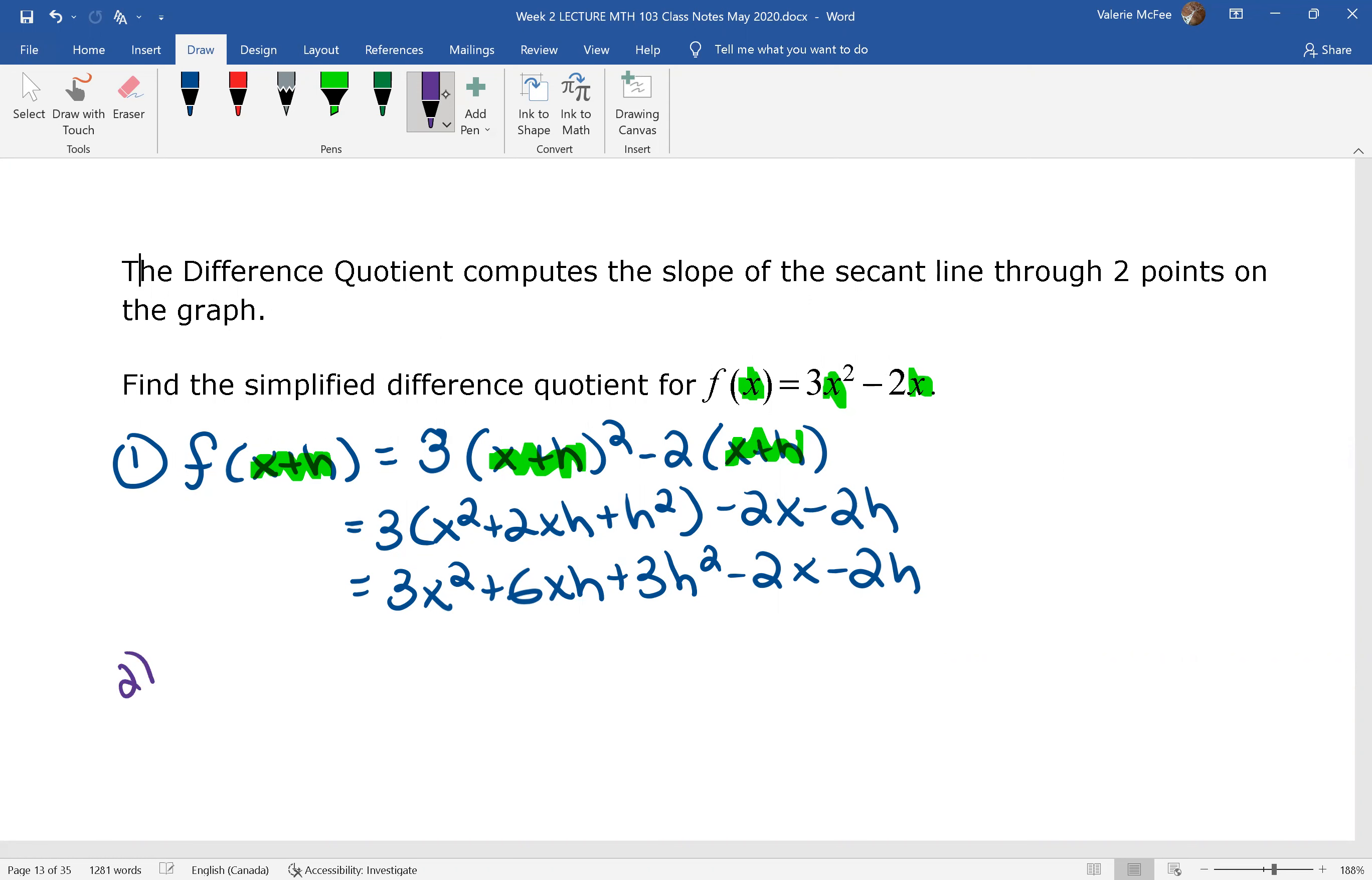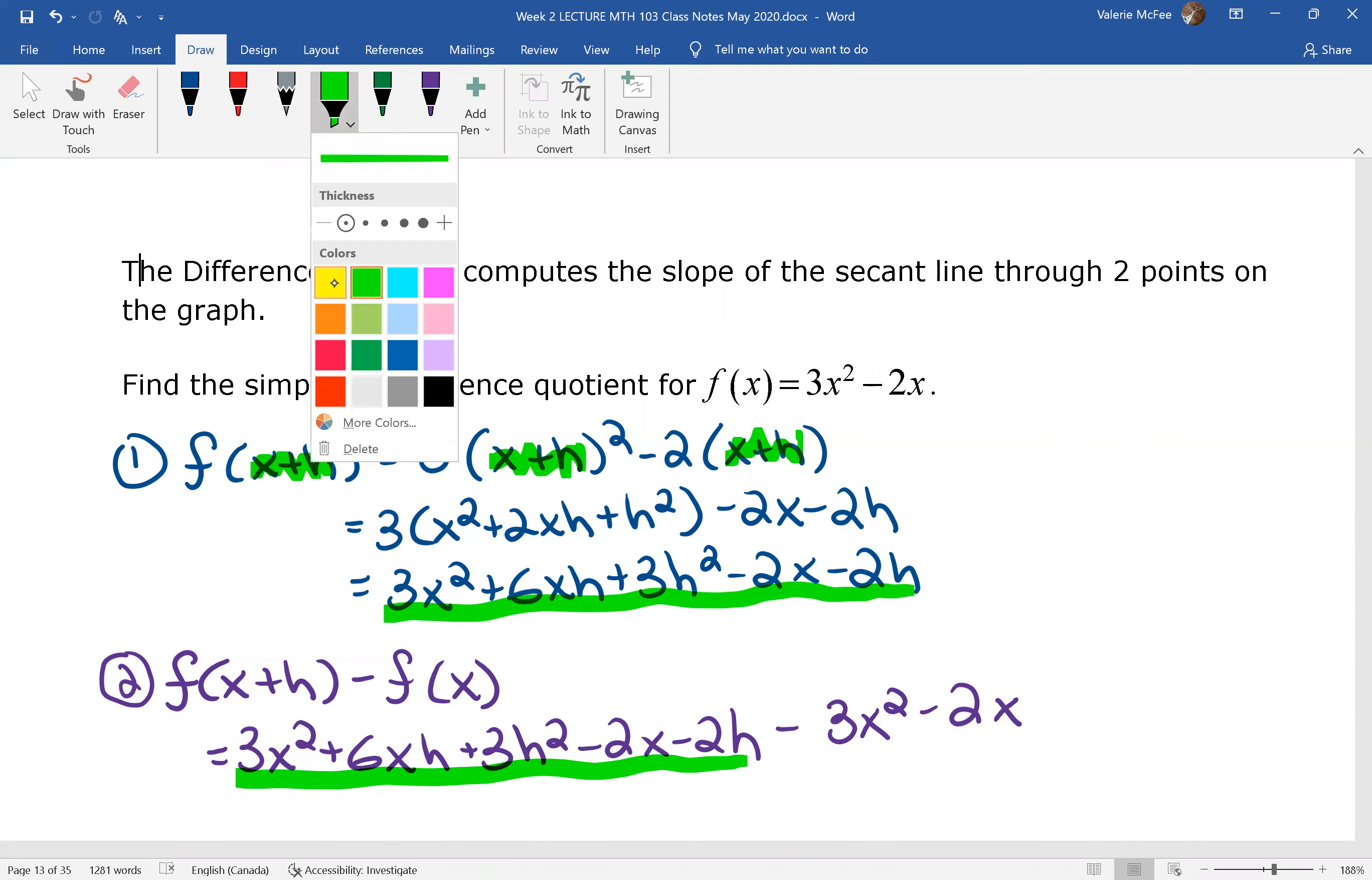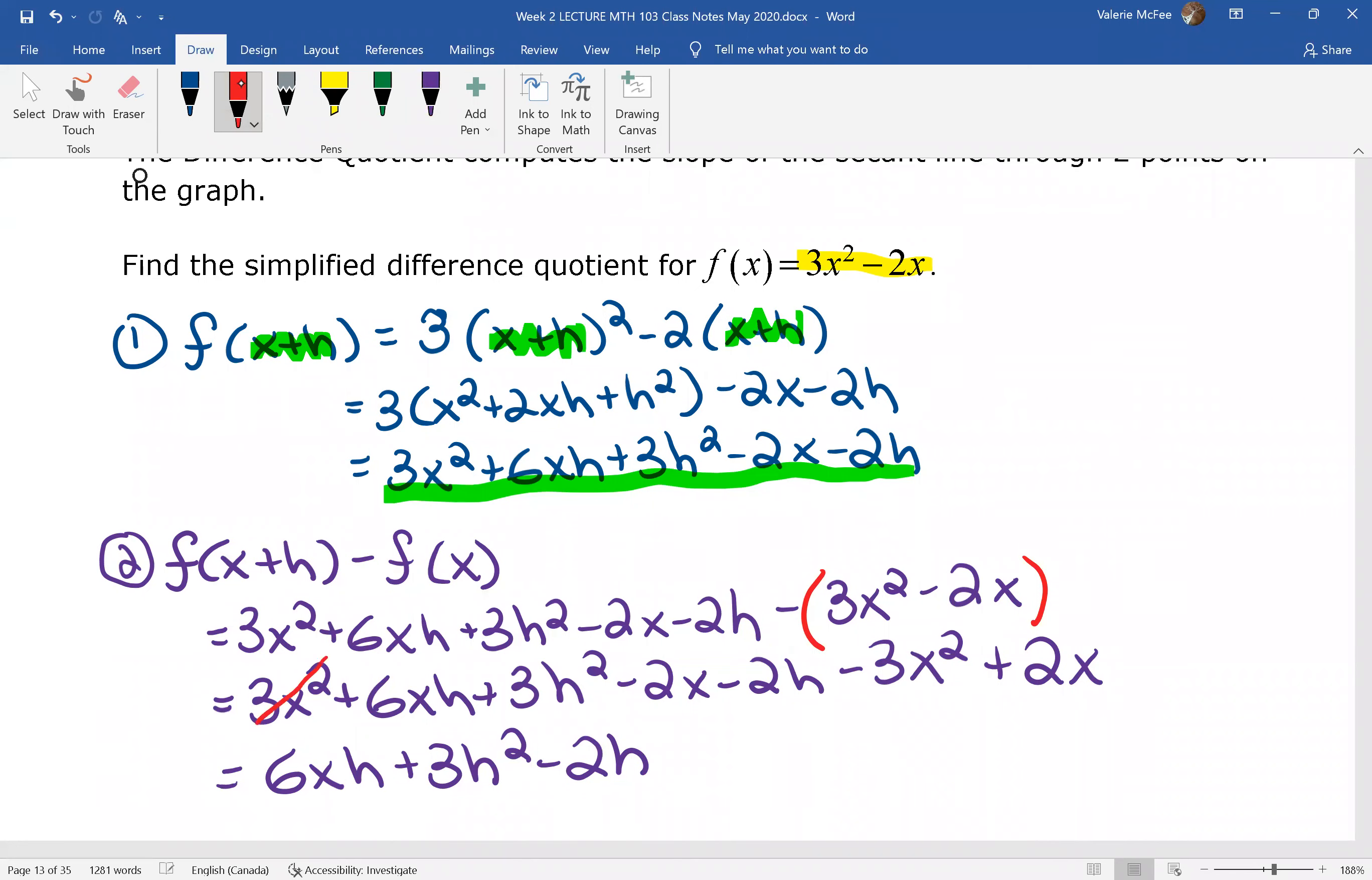The second step is to do the whole numerator. The f(x+h), we just found that, minus f(x). See if you can write that out. So you started with f(x+h). That was all of this here. And then we wanted to subtract f(x). We're subtracting f(x). That means we need brackets here. Did you simplify this? You had 3x² minus 3x² and 2x minus 2x. So we're left with 6xh plus 3h² minus 2h. And notice that h is common.